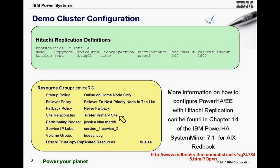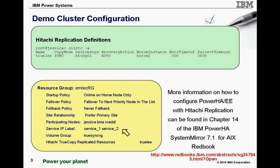We do have a site relationship set up to prefer primary sites. However, in most true DR situations you wouldn't utilize this option — we did it for other demonstration purposes, but it will not be part of this demo today. We're going to show a single primary site failure and recovery over to the remote site. We also have two service IP addresses configured, using what's called site-specific service IP addresses. When the resource group is up on the primary node JESSICA, service address one is active; when it fails over to the remote site, service address two is active — more common where the remote site is on a separate subnet. We have a volume group called True Sync VG in our replicated resource of TRULi.